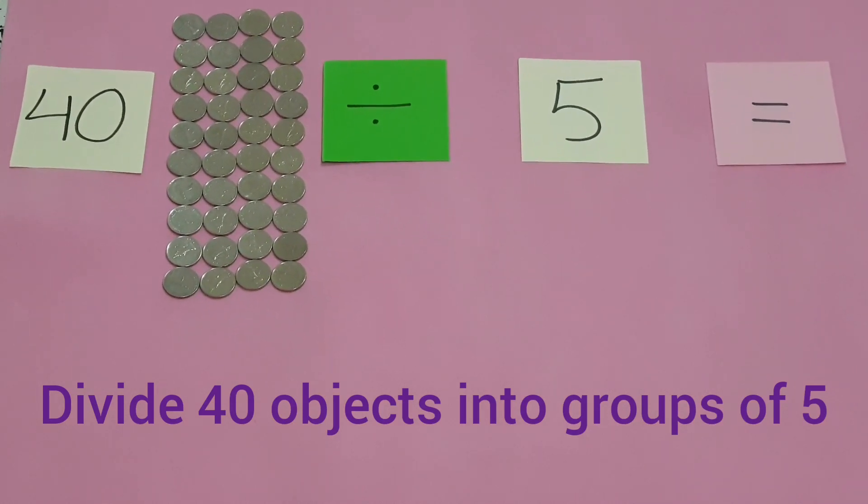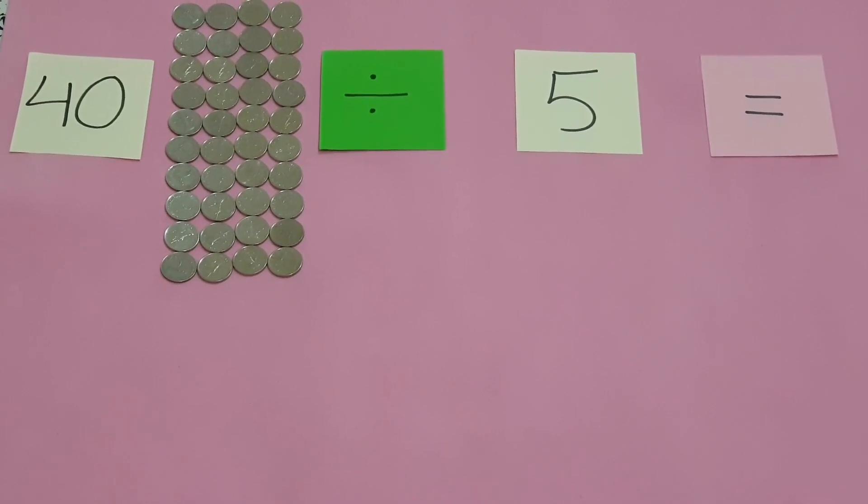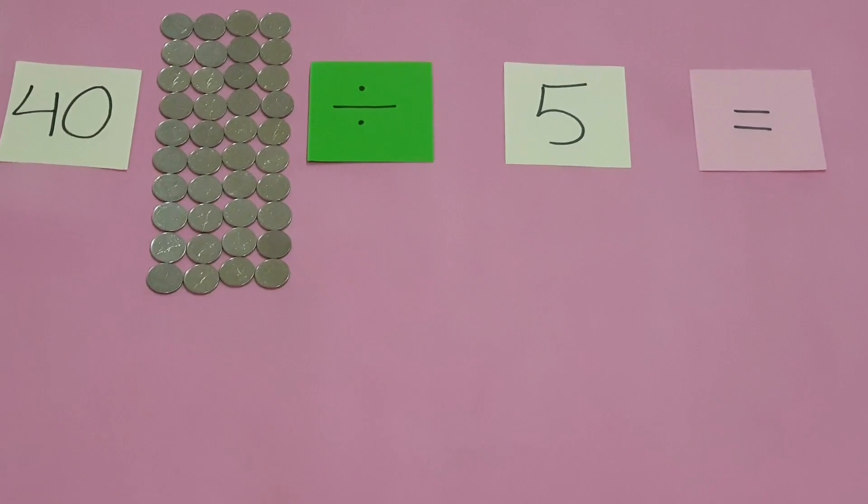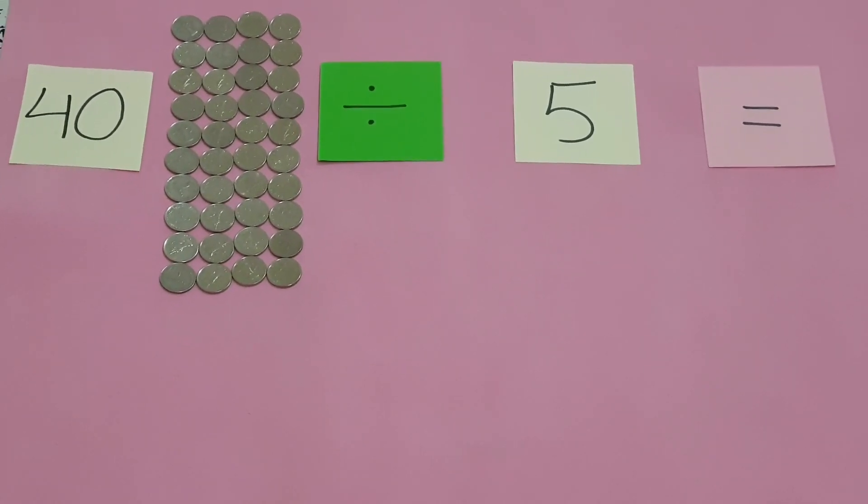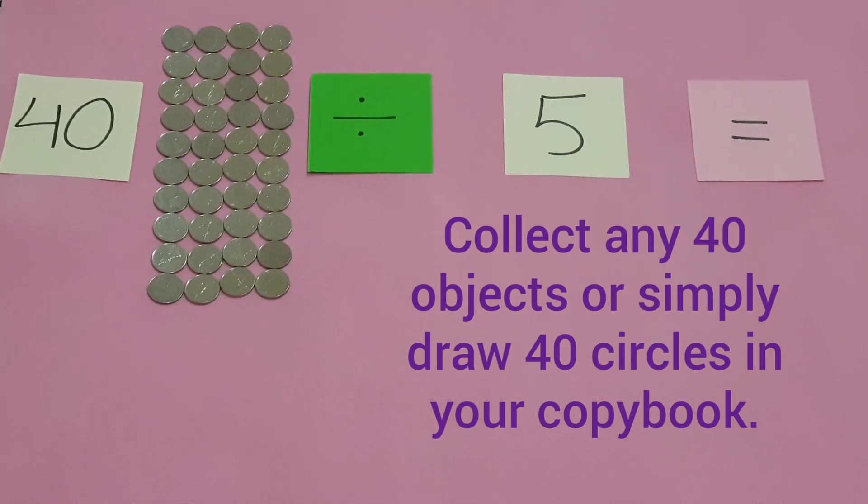Hi everyone, today our math objective is to collect 40 objects from house and divide them in five groups. You can collect coins or any food item. If you have 40 toys you can collect them.